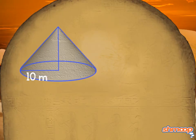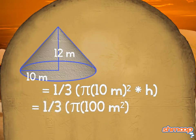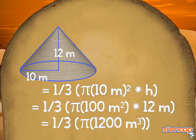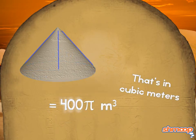If the radius of the cone's base is 10, and the height is 12, we can plug them into our formula. One-third times pi times 10 squared times height equals one-third times pi times 100 times 12. Then you get 1200 divided by 3, which equals 400. So our answer is 400 pi.